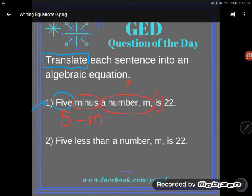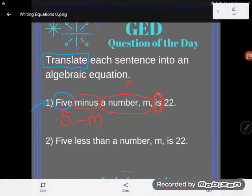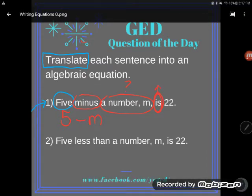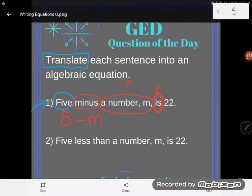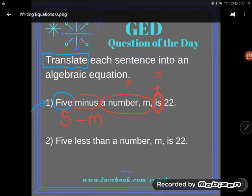Now how about the word is? I'm doing direct translation right here, just word for word. Is is a really interesting word because look what I'm saying here. I'm saying five minus a number M is 22. This is that. When I say mathematically that this thing is that thing, I'm saying that the two things are the same. They are equivalent. So this is another way of saying equals.